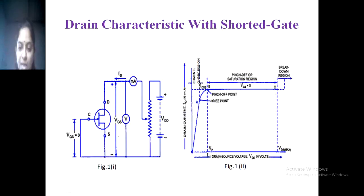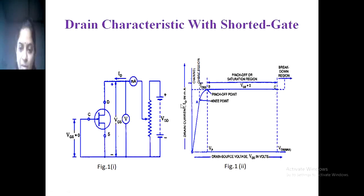In the diagram, when VDS is zero, ID current is zero. When we increase VDS, the ID current also increases, and here is the knee point in the graph. Before this knee point the JFET acts as a resistor — that area is known as the ohmic region.